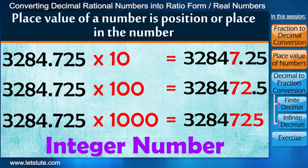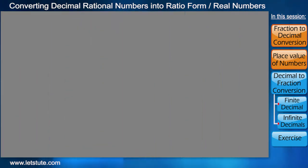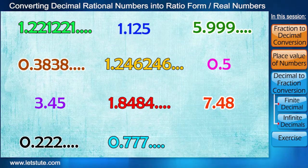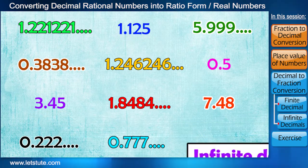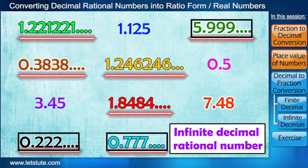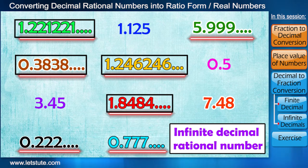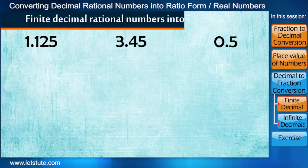I hope we have understood this basic concept of place value of numbers. Now we know that decimal form of rational numbers can have finite number of digits or it can have infinite number of digits with one or more digits repeating or recurring in a pattern. So let's first learn to write finite decimal rational numbers into fraction form.